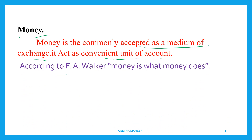According to FA Walker, money is what money does. That means money will act as a measure of value, medium of exchange, store of value, transfer of value, and standard of deferred payment. All these functions will be performed by money, and because of that reason, in simple words, we define money as what money does.